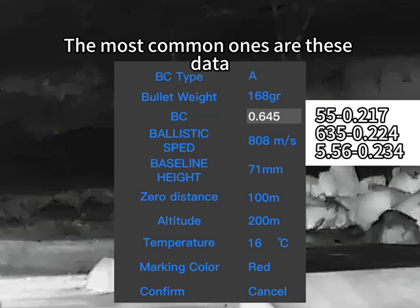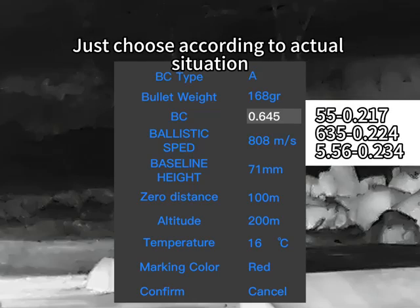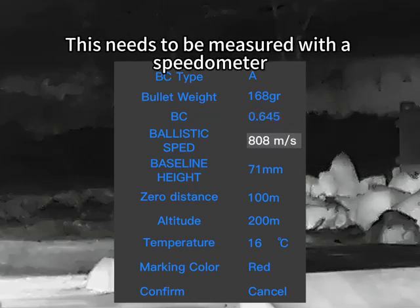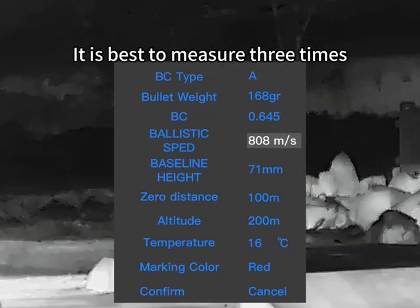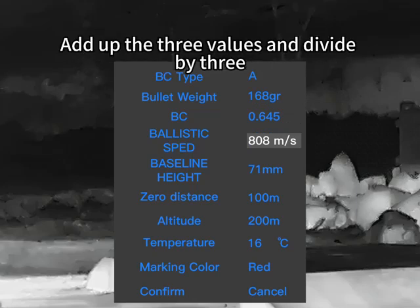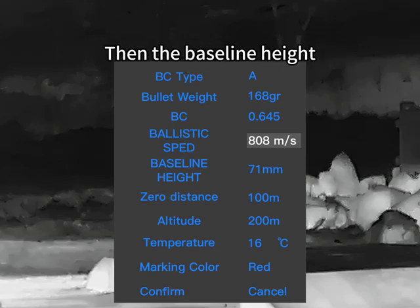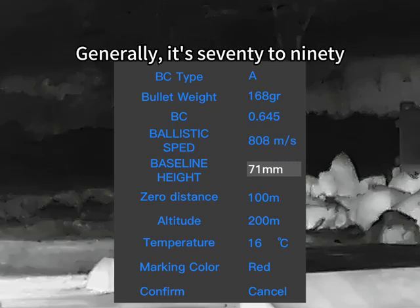The next field is muzzle velocity. This needs to be measured with a chronograph. It is best to measure three times, add up the three values, divide by three, and fill in the average muzzle velocity. Then there is the baseline height, which is generally 70 to 90.